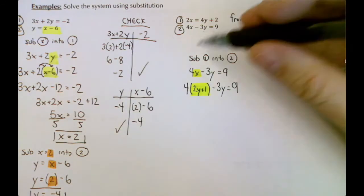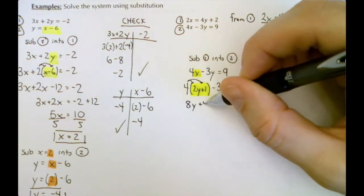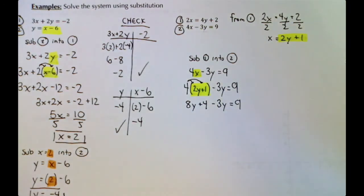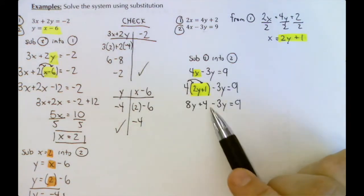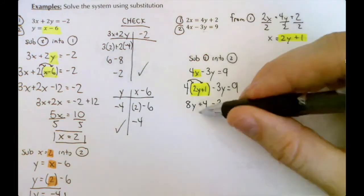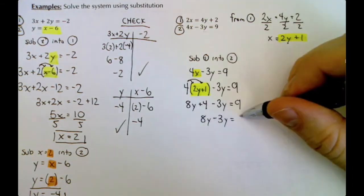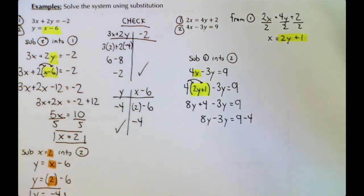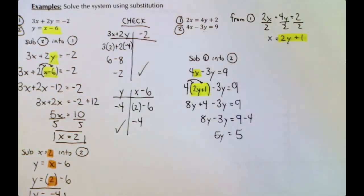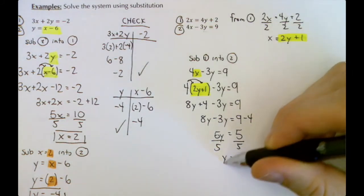We distribute the 4: 4 times 2y is 8y, and 4 times 1 is 4, so we get 8y + 4 - 3y = 9. Now collect like terms — keep y's on the left, move +4 to the right side as -4. That gives 5y = 5. Dividing both sides by 5, we get y = 1. That's the first part of our solution.